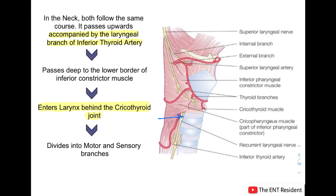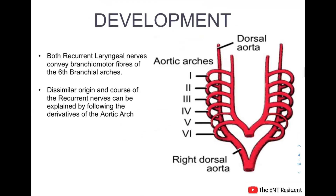After entering the larynx, it divides into its motor and sensory branches. So to summarize: the right and left recurrent laryngeal nerves take different origins, ascend upwards to the neck, then both follow a similar course — entering the larynx behind the cricothyroid joint and dividing into motor and sensory branches. Now we'll explain this difference on the basis of development.